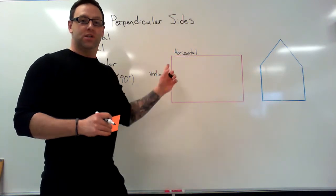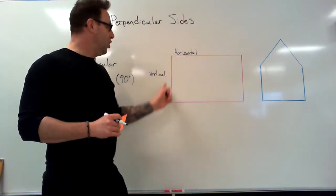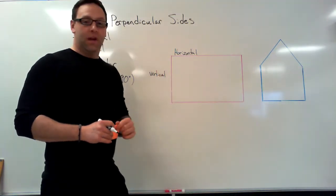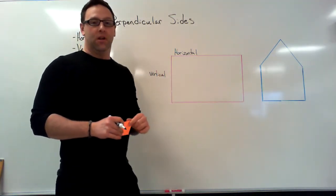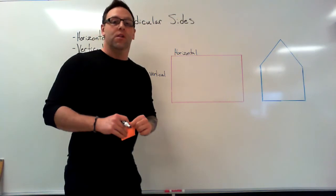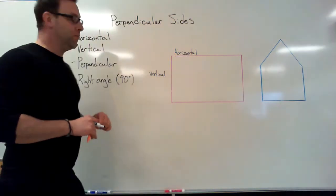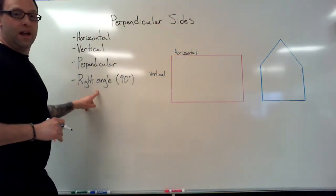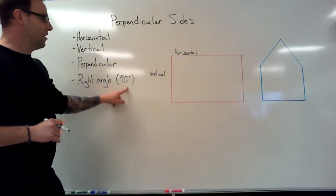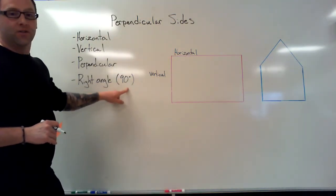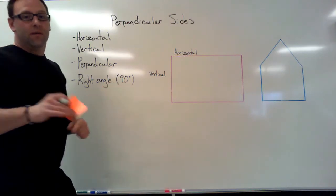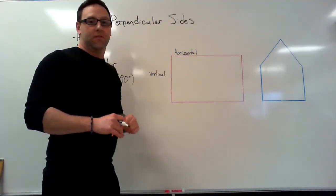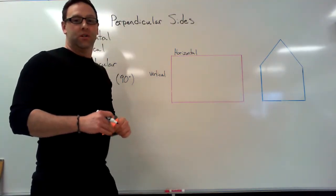That square is actually the symbol we're going to use to show that we have perpendicular lines. There's another term we're going to talk about called the right angle. You'll see that I've written 90 degrees in here — that's just a little bit of added information for another time.